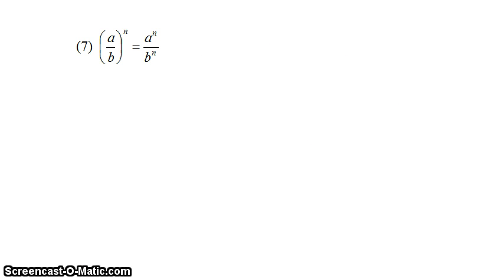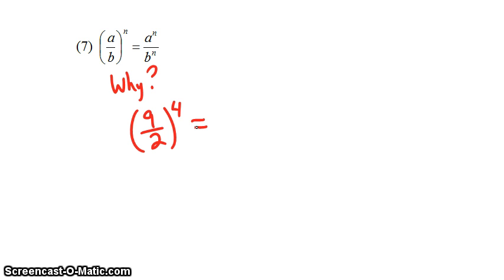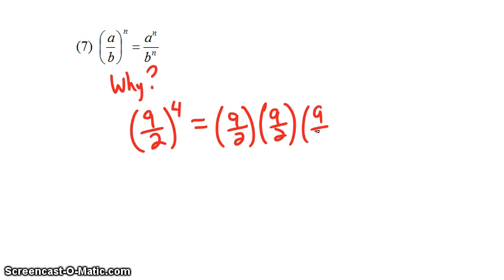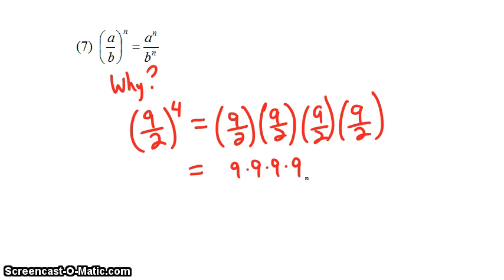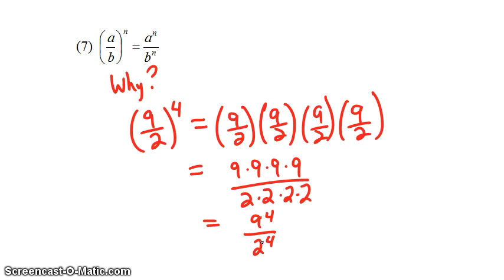The 7th rule says that a over b raised to the nth power is equal to a to the n over b to the n. Let's look at 9 halves raised to the 4th power. According to this rule, the answer should be 9 to the 4th over 2 to the 4th. 9 halves to the 4th power means 9 halves times itself 4 times. When we multiply fractions, we multiply across the top and across the bottom, giving us 9 times 9 times 9 times 9 on top and 2 times 2 times 2 times 2 on the bottom, which equals 9 to the 4th over 2 to the 4th.